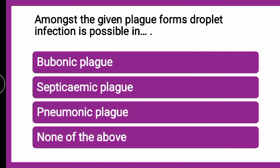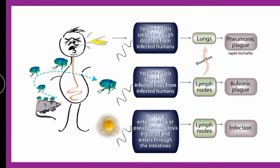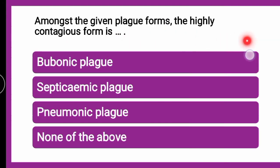Pneumonic plague is confined to the lungs and spreads through droplets, so droplet infection is possible in pneumonic plague and it spreads faster compared to bubonic and septicemic plague. Therefore, the next question — amongst the given plague forms, the highly contagious form is — has the answer pneumonic plague, since droplet infection is possible and it spreads faster, making it the most contagious form.